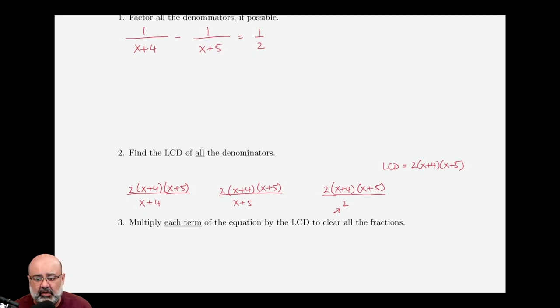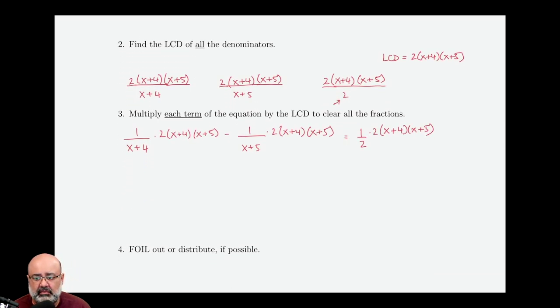Now we need to multiply each term of the equation by the LCD to clear all the fractions out. So 1 over x plus 4 times 2 times x plus 4 times x plus 5, minus 1 over x plus 5 times 2 times x plus 4 times x plus 5, equals 1 over 2x times 2 times x plus 4 times x plus 5. So we've multiplied each term of the equation by the LCD. The x plus 4 cancels with the x plus 4.